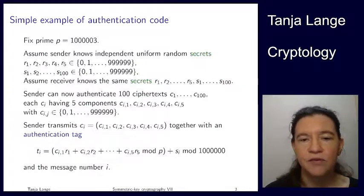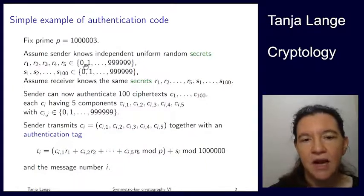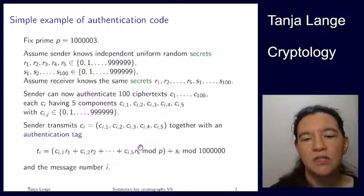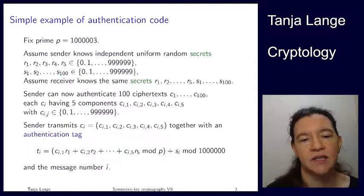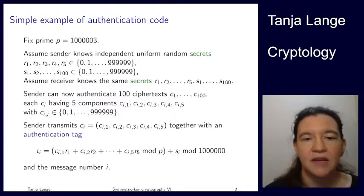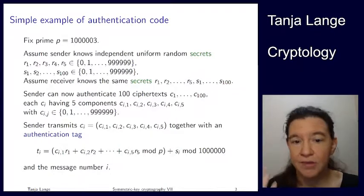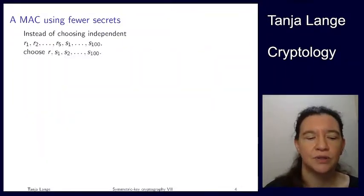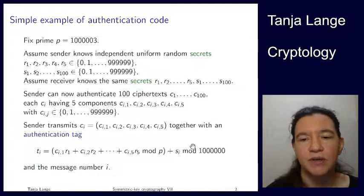If Eve is starting with an existing authenticated message, she could also try to fake a message or a tag — she could just pick a random tag. Then there is a one-in-a-million chance that she gets the correct one. I want to show one improvement: instead of having five different r values, we can reduce to just one r and one s per message, and get the different r_i's by taking powers of r.